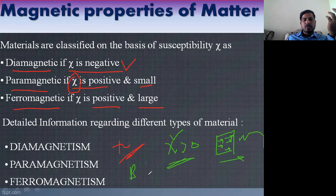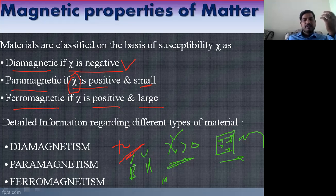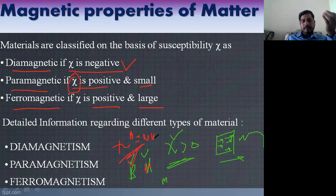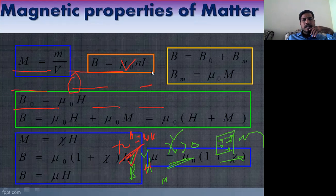There are three terms: B is magnetic induction, H is magnetic intensity, and M is magnetization. Induction is related to the applied field: B = μ₀H. You can also see this relation in the previous slide. Magnetization is the magnetic moment per unit volume.